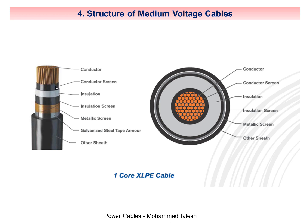The next layer is the inner semiconductive layer, which is called the conductor shield or conductor screen. This layer is made of a carbon mixture with polyethylene and is applied directly onto the surface of the uneven conductor, because the uneven surface of the conductor leads to irregularity of the electric field. This layer makes the effect of the electric field equal across all surfaces of the dielectric, which prolongs the life of the dielectric and prevents the occurrence of the water tree phenomenon.